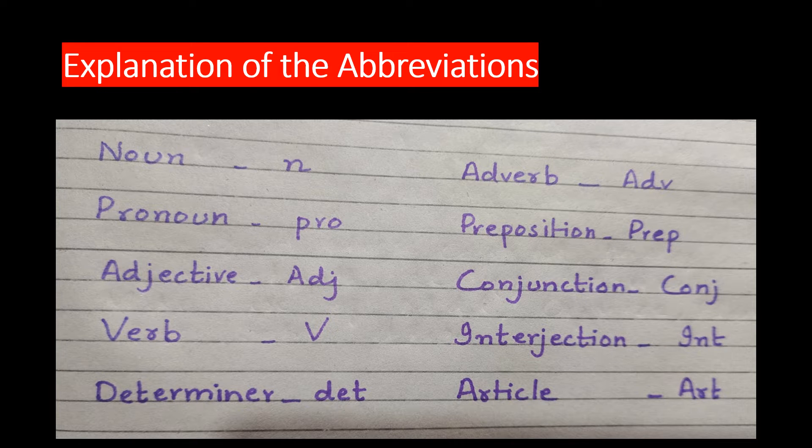First of all, we will see the explanation of the abbreviations of parts of speech that we will be using in this video. For noun, there will be N. For pronoun, there will be PRO. For adjective, there will be ADJ.